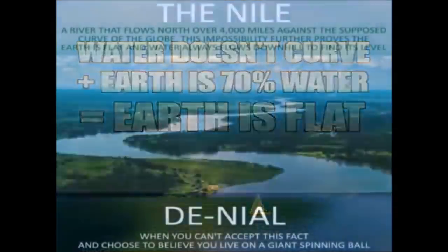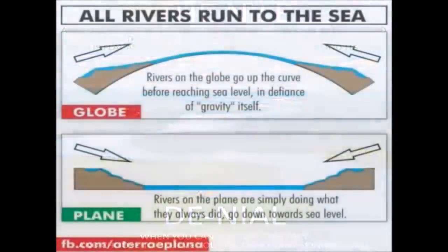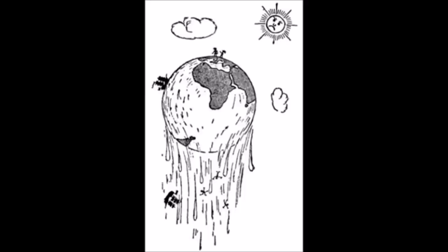Water is liquid. It runs always down and seeks its level, and never runs up unless by power. The water of the ocean is every way pretty near joined together on the earth, and it is liquid — it will not stay on a round earth. Take a glass of water and pour it on a round ball, and if the water stays on then the earth must be round, but if the water falls off then the earth must be flat. This is the proof.